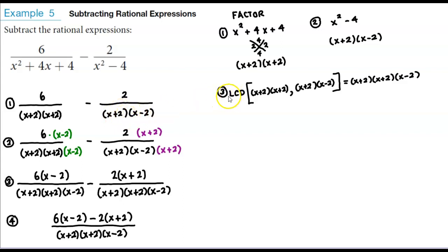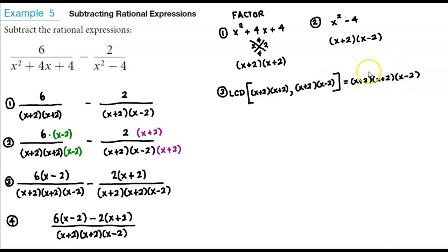Now we need to find the LCD between the two denominators. They both have an x plus 2 in common, but there are two of them in the first denominator, so we include two. What they do not share is an x minus 2. Therefore, the LCD is x plus 2 times x plus 2 times x minus 2.